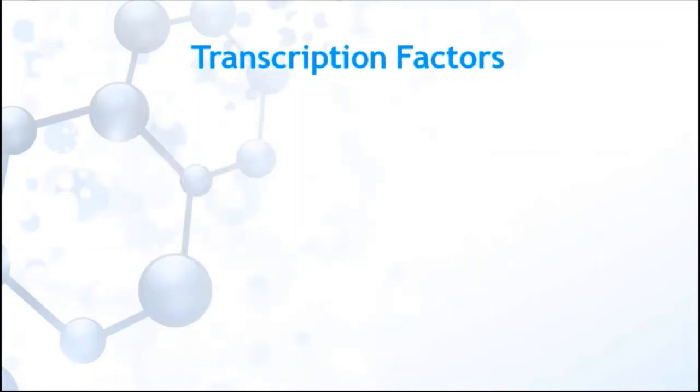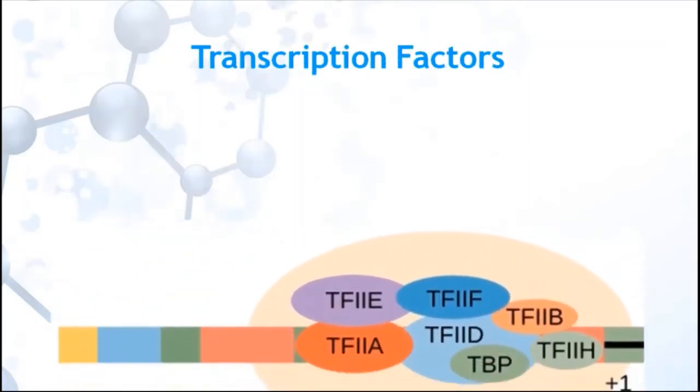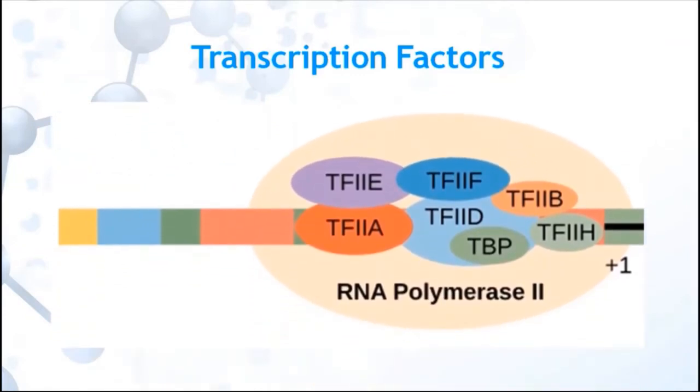Transcription factors are proteins that control the rate of transcription of genetic information from DNA to mRNA by binding to specific DNA sequences. Their main function is to regulate, turn on and turn off genes to ensure they are expressed in the right cell at the right time and in the right amount throughout the life of the cell and organism. There are about 1600 transcription factors in the human genome.